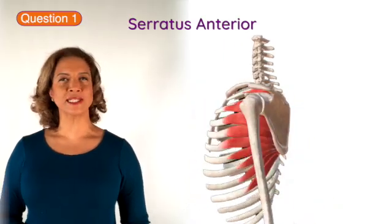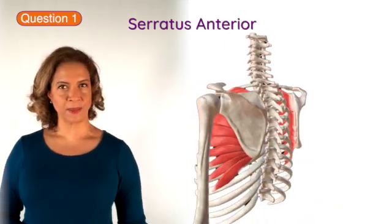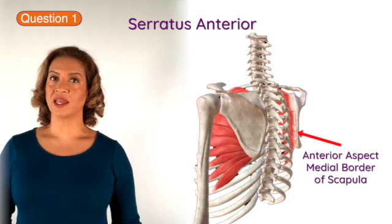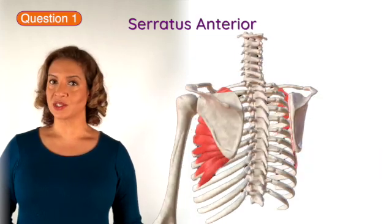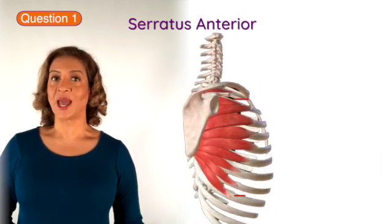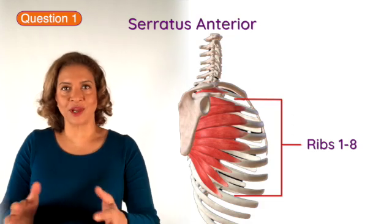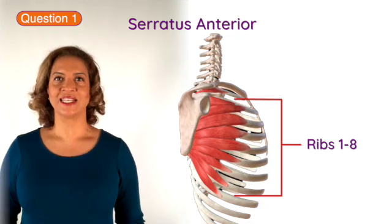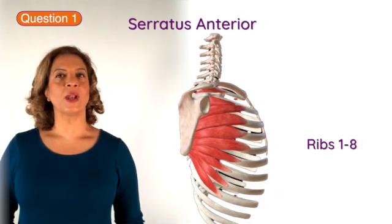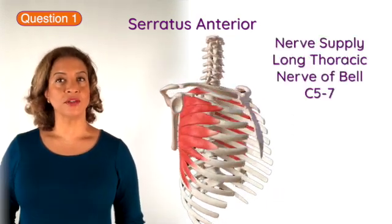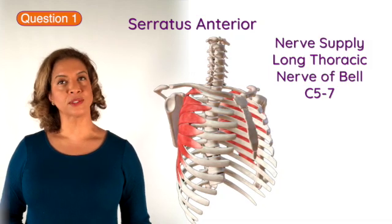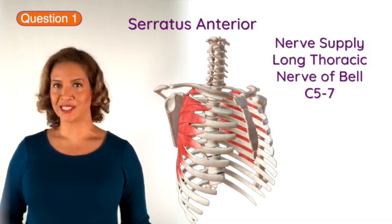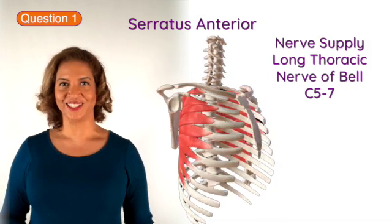This is the serratus anterior muscle. It attaches to the anterior border of the scapula and also attaches to ribs 1 to 8, so it wraps around the ribs. It is supplied by the long thoracic nerve of Bell, which arises from nerve roots C5, C6 and C7.